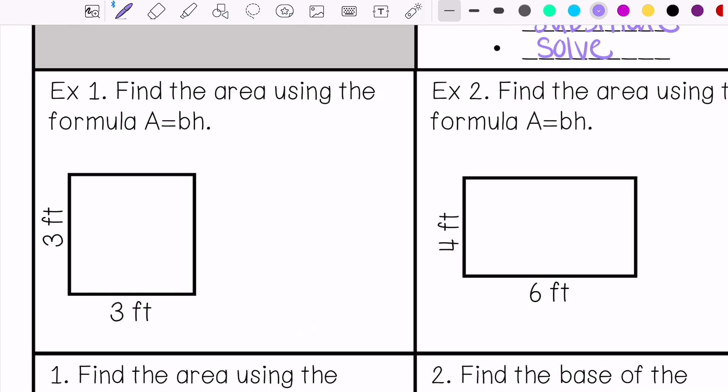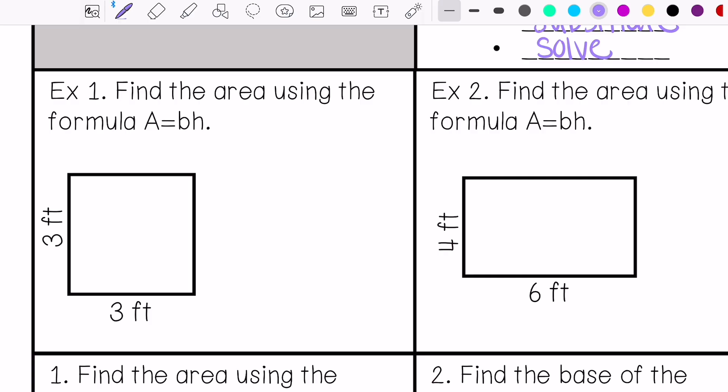Alright, let's do example number one. It says find the area using the formula area equals base times height. So area equals base times height. This is my height. This is my base. So I would do 3 times 3. And this is going to be 9 feet squared.